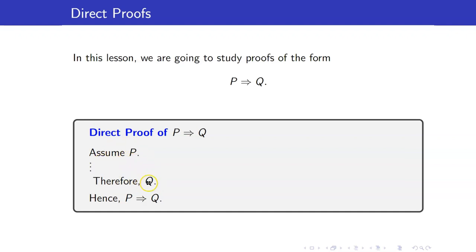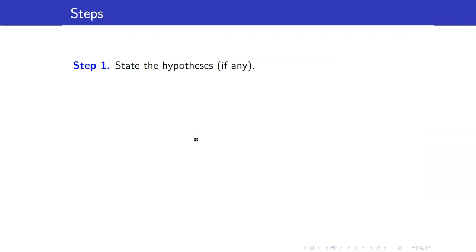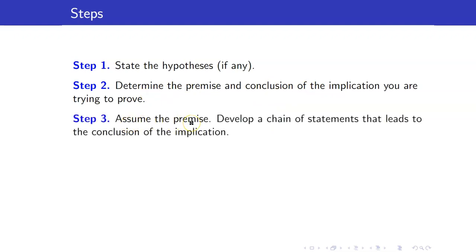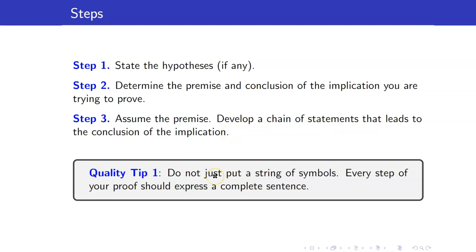Hence, a direct proof has the following form: assume the premise P is true, and then develop a chain of statements that leads you to the conclusion Q is true. Once you have done this, you have proven that P then Q is true. In writing your proofs, state the hypothesis if there is any, determine the premise and conclusion of the implication, assume the premise is true, and develop a chain leading to the conclusion. Every step should express a complete sentence — do not just put a string of symbols.